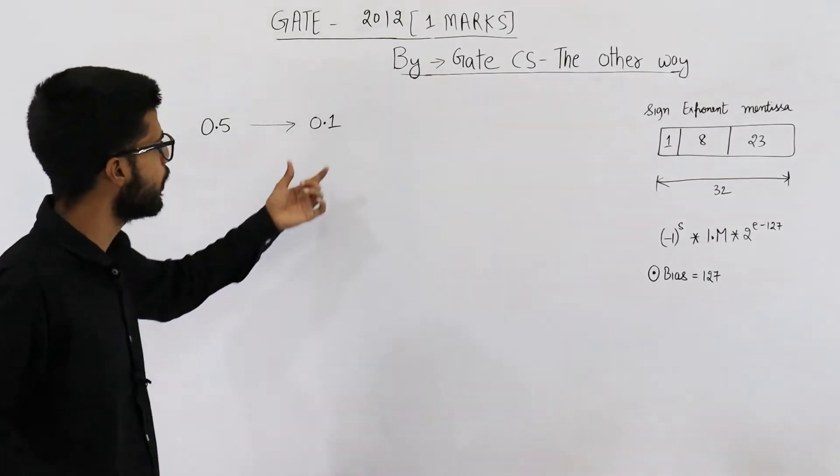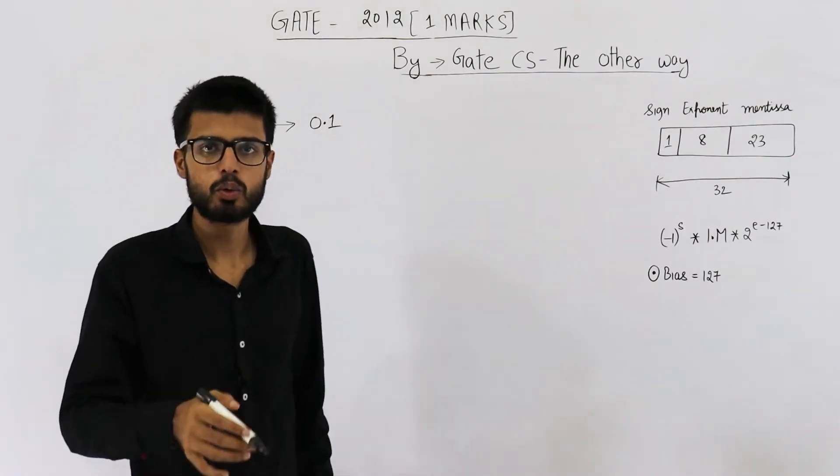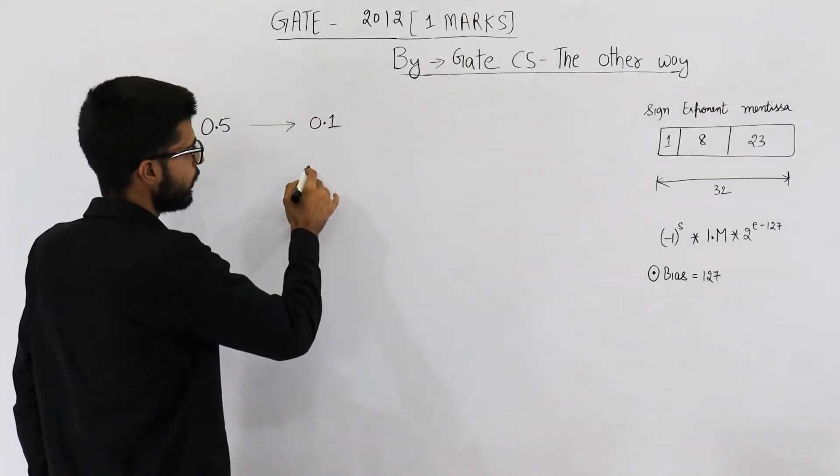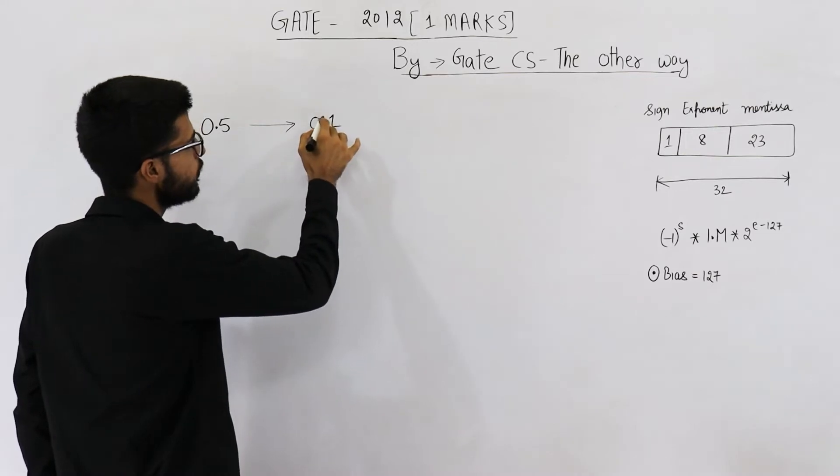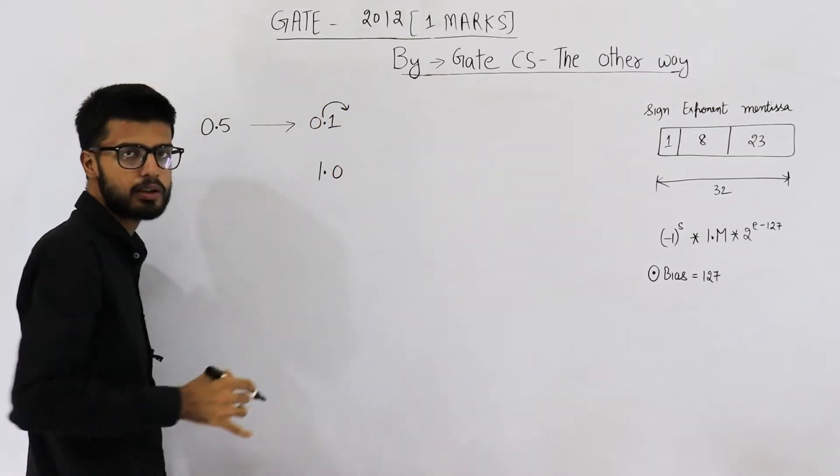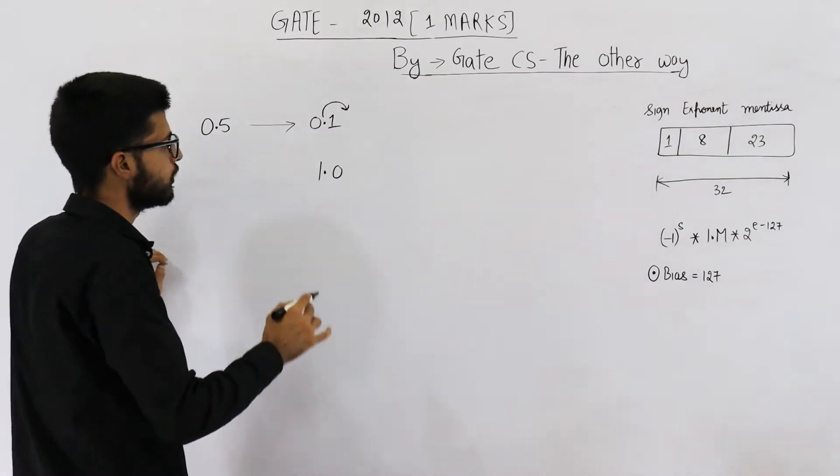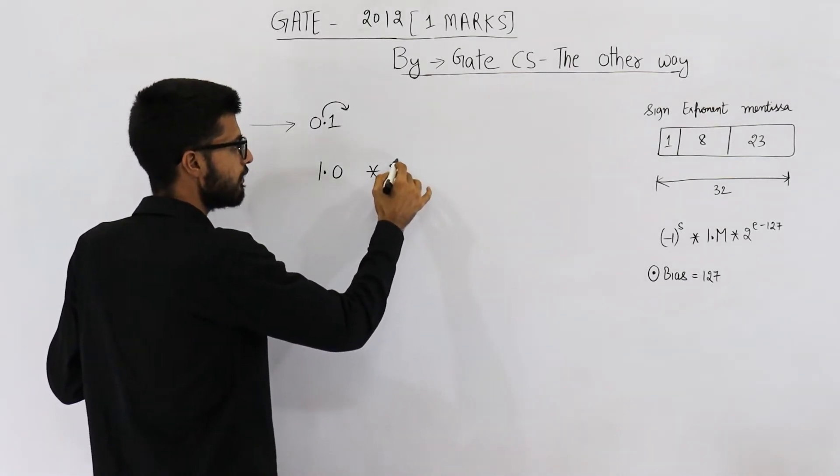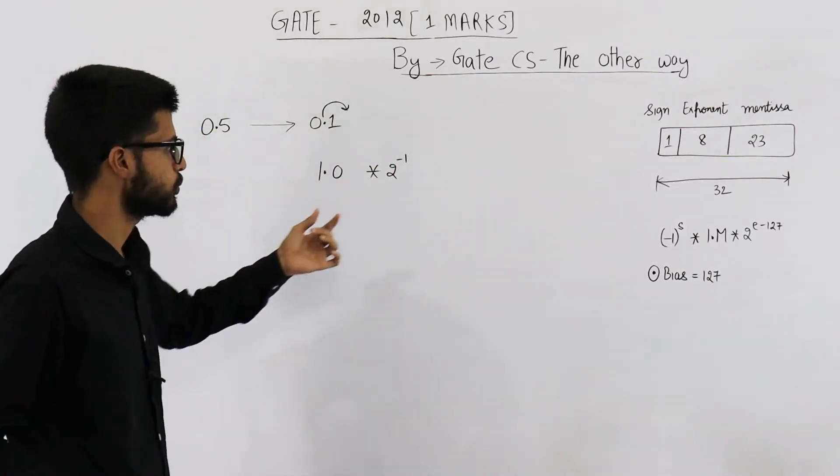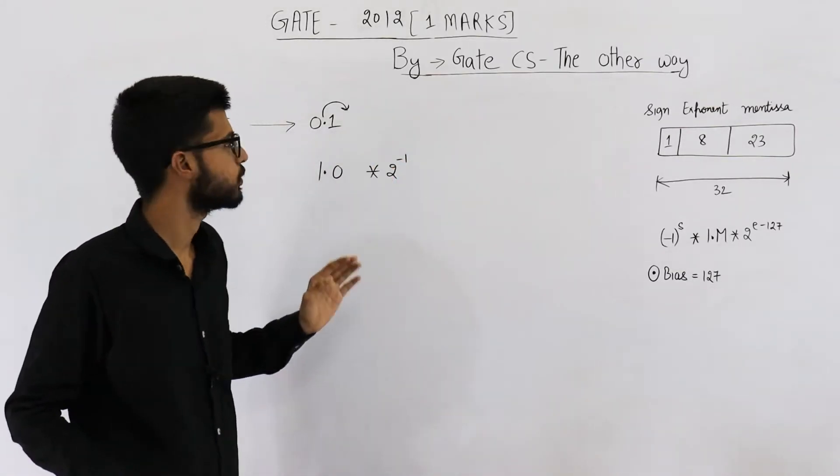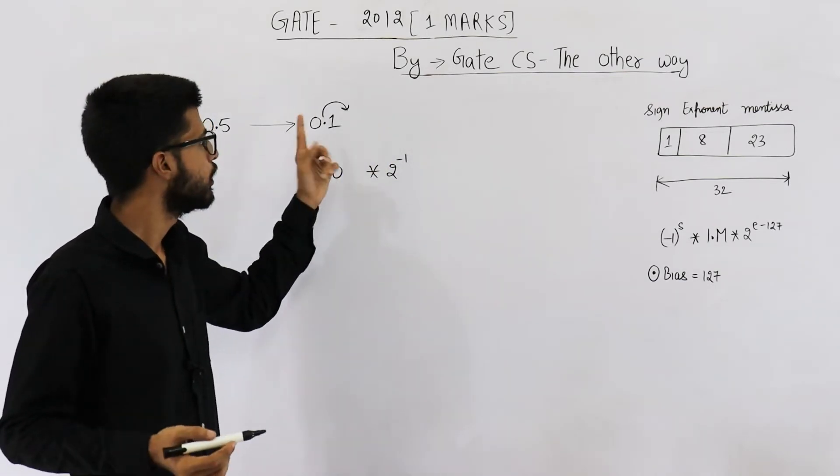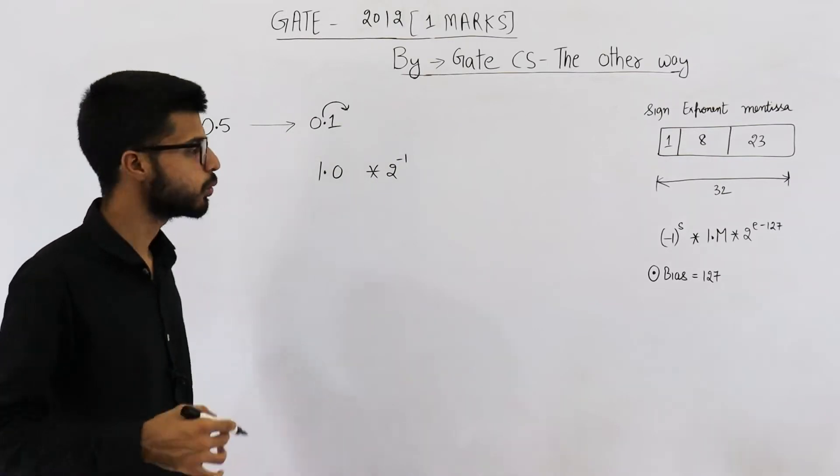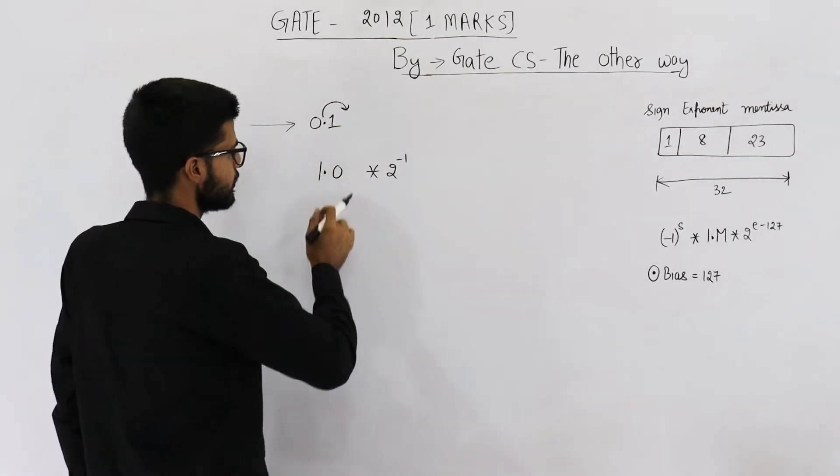Now we want this in the form of one point mantissa into 2 raised to the power exponent. To get one point something, we have to move this radix point by one bit to the right side. Now if we have moved the radix point to the right side, we will divide by 2. So this exponent will be 2 raised to the power minus 1. By moving radix point to this side, you are multiplying by 2. To compensate it, just take 2 raised to the power minus 1. So this is the number.